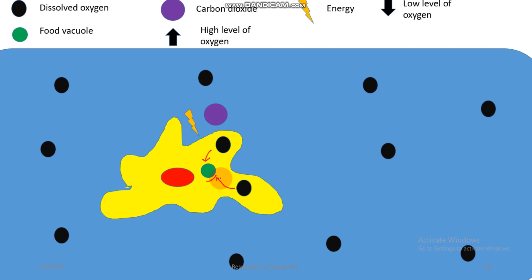Once oxygen is consumed, a low concentration region forms again inside the body of amoeba, while the water outside remains at a higher concentration. So the same diffusion process repeats — more dissolved oxygen enters the body, food is broken down again, and energy, carbon dioxide, and water are produced. This is how the gases are continuously exchanged.